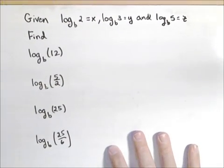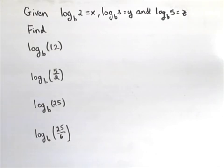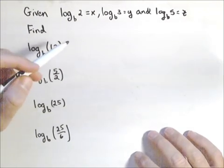So here's what we have. We're given log base b of 2 equals x, log base b of 3 equals y, and log base b of 5 equals z. We want to find the following in terms of x, y, and z.